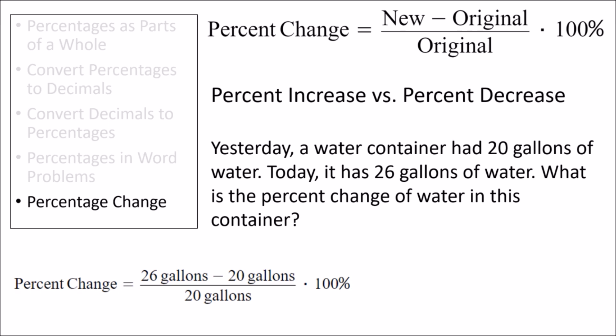In other words, we want to choose the 20 gallons to be the original value because this value came before the water volume was 26 gallons. So the value will be 26 gallons for the new value, and the original value will be 20 gallons.